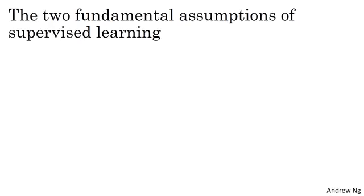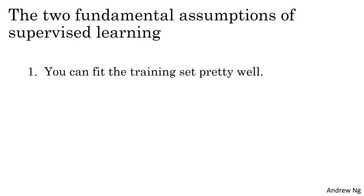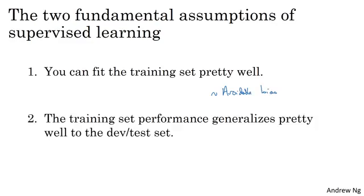Getting a supervised learning algorithm to work well means fundamentally assuming you can do two things. First, you can fit the training set pretty well — roughly meaning you can achieve low avoidable bias. Second, doing well on the training set generalizes pretty well to the dev set or the test set, which means variance is not too bad.